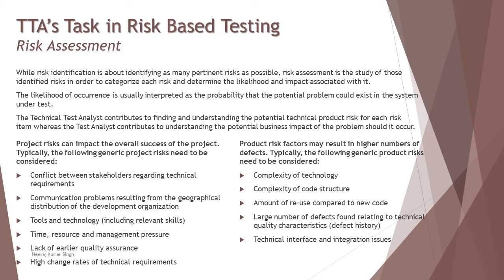From foundation level, you've already learned that project risk is related to the lifecycle of the project — any activity or people-related internal factor. Project risk examples include: conflict between stakeholders regarding technical requirements, communication problems resulting from geographical distribution of the development organization, tools and technology concerns, time and resource pressures, lack of earlier quality assurance such as static testing not being conducted, and high change rates of technical requirements contradicting integration parameters.